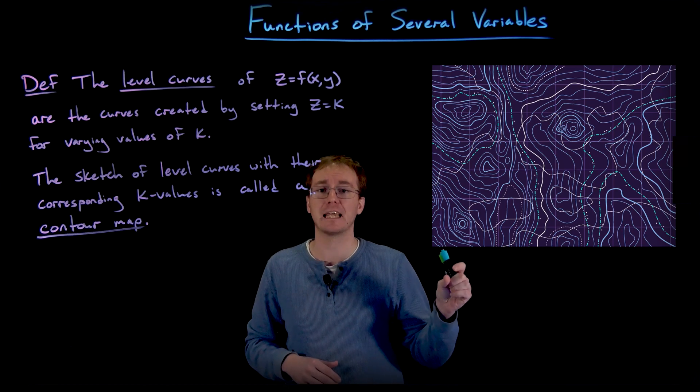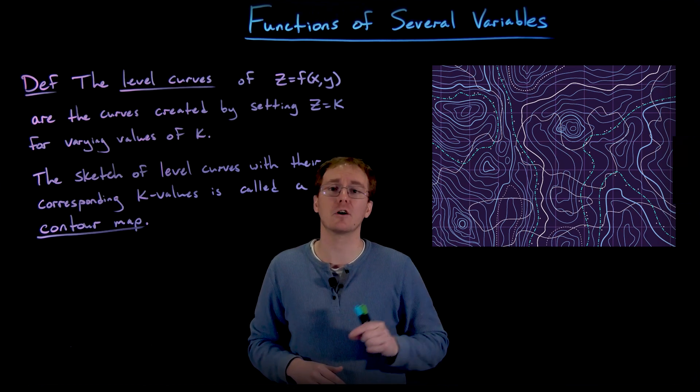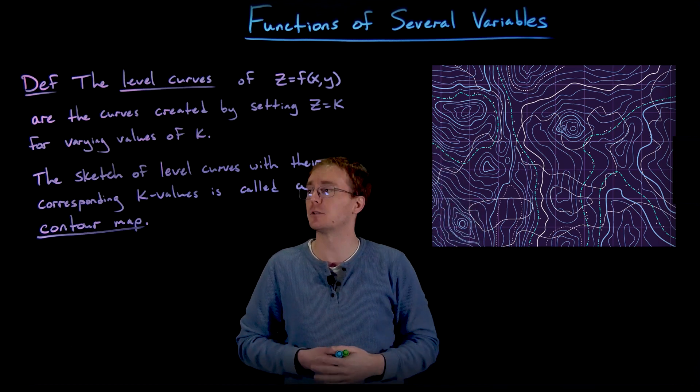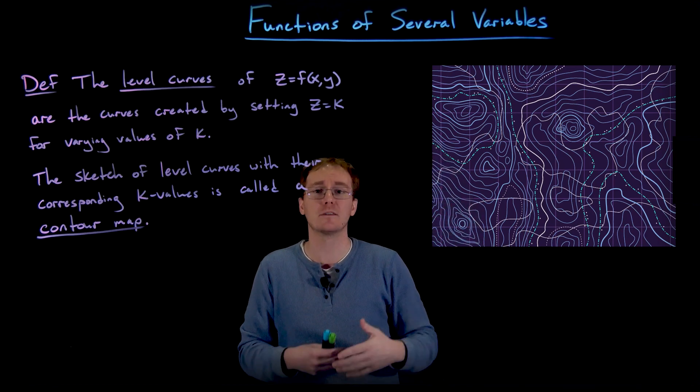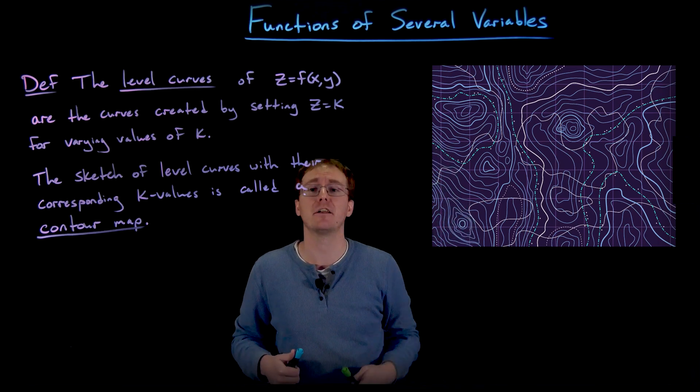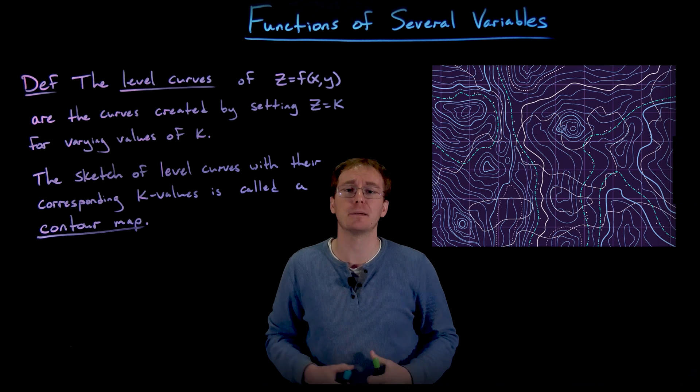If we have a large change in k values without much space between our two level curves, that means in order to take this large vertical change, which is the difference between these k or z values, we have to take a small step. That means this small step has to gain us a lot of elevation. So it's got to be a pretty steep hill we are climbing.